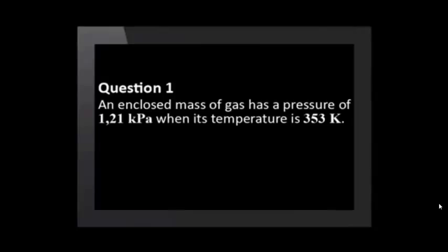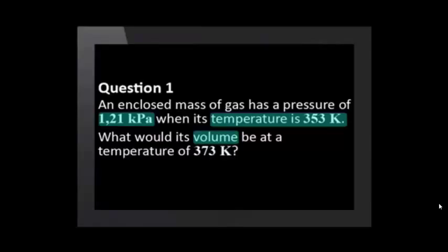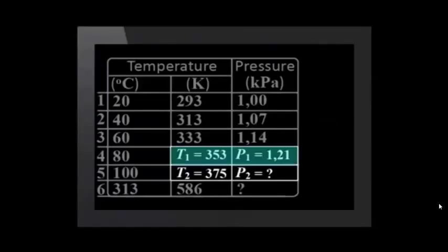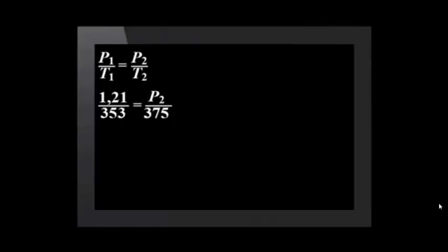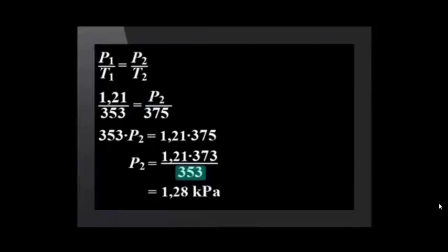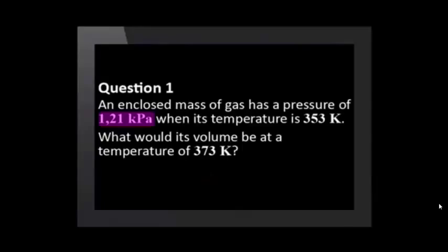An enclosed mass of gas has a pressure of 1.21 kilopascals when its temperature is 353 Kelvin. What would its volume be at a temperature of 373 Kelvin? We call the data set we know fully T1 and P1 and the data set with the unknown T2 and P2. We substitute values into the equation. We cross multiply. 353 times P2 equals 1.21 times 375. We divide both sides of the equation by 353 and solve.